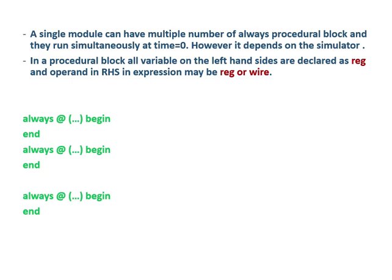A single module can have multiple always procedural blocks. Inside your design you can have more than one always block — it can be ten, twenty, or thirty always blocks.